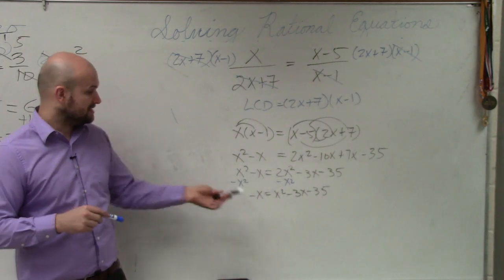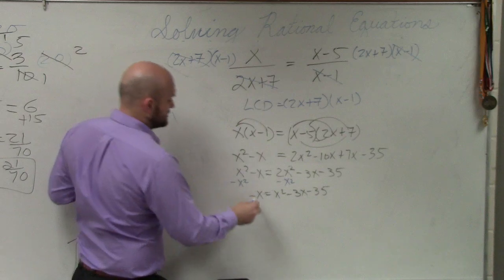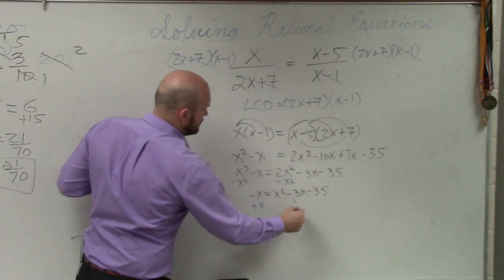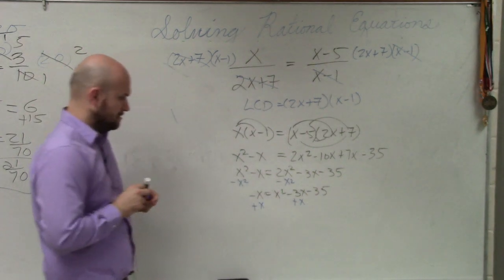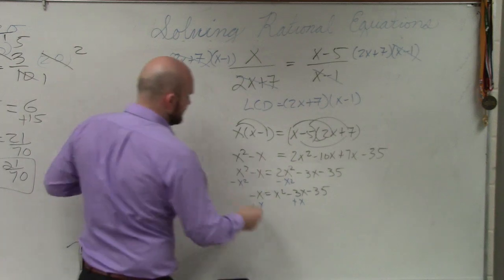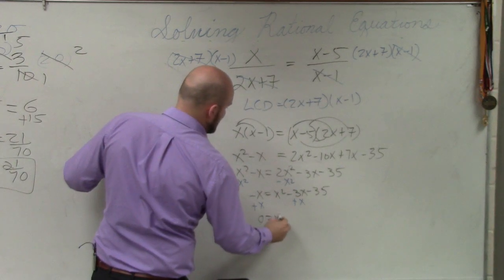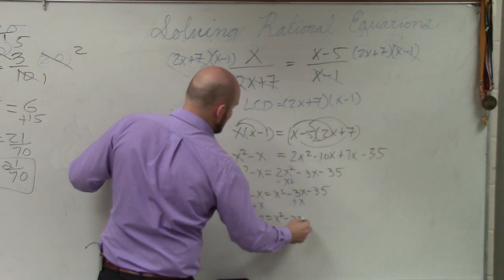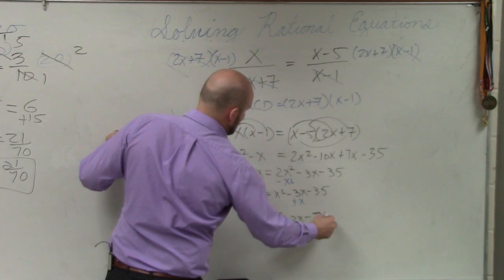Yeah. Now the next step. Let's get rid of the negative x. So I'll add an x. So now I have 0 equals x squared minus 2x minus 35.